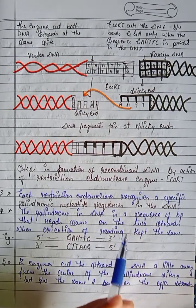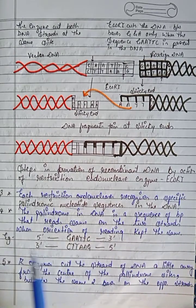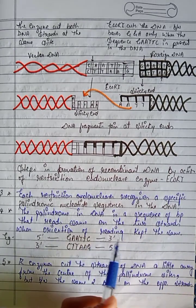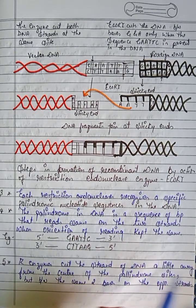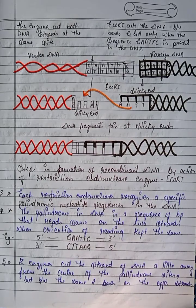A palindrome in DNA is a sequence of base pairs that reads the same on both strands when the orientation of reading is kept the same. What is a palindrome? In simple words, a palindrome is a word, number, or date that reads the same forwards and backwards.